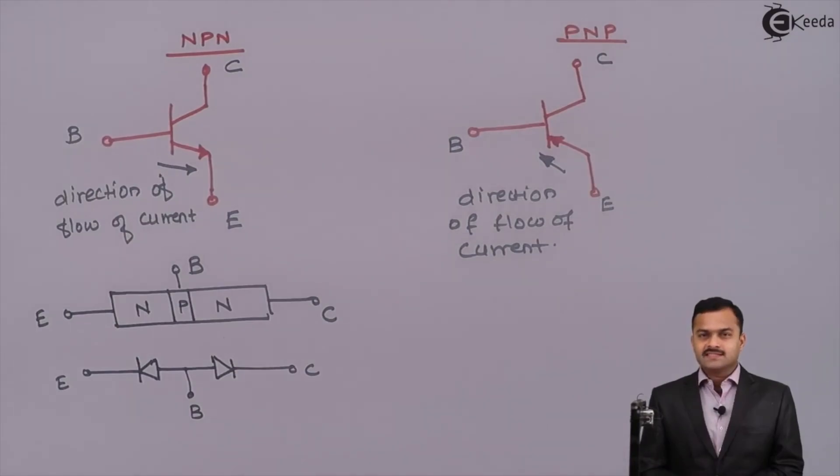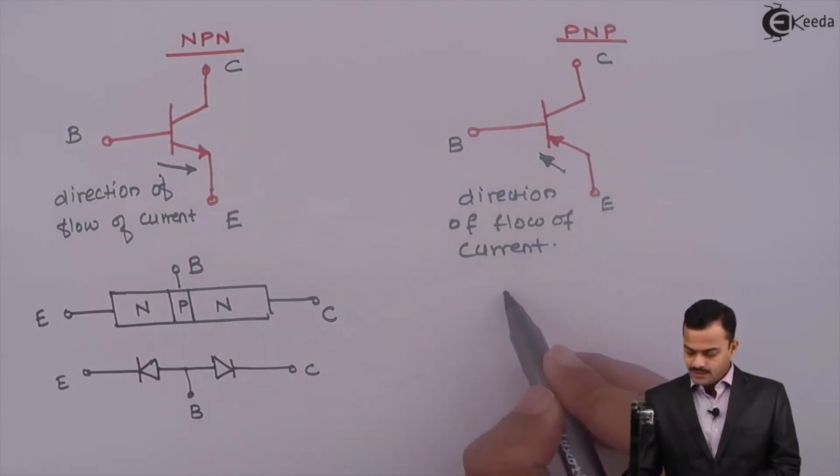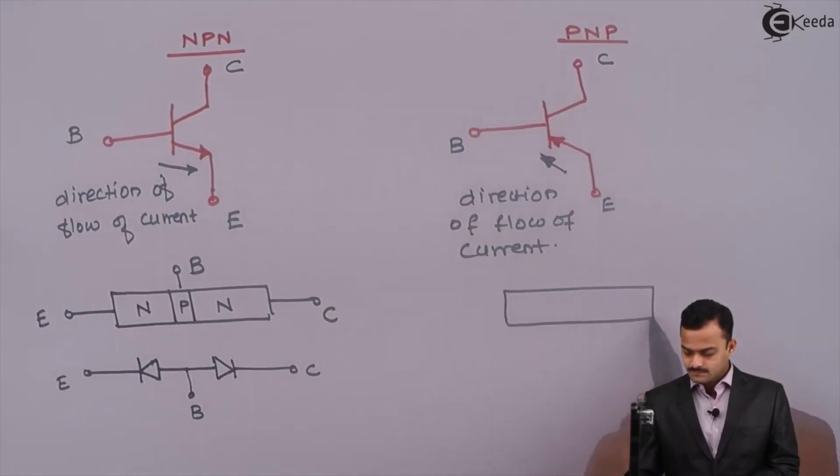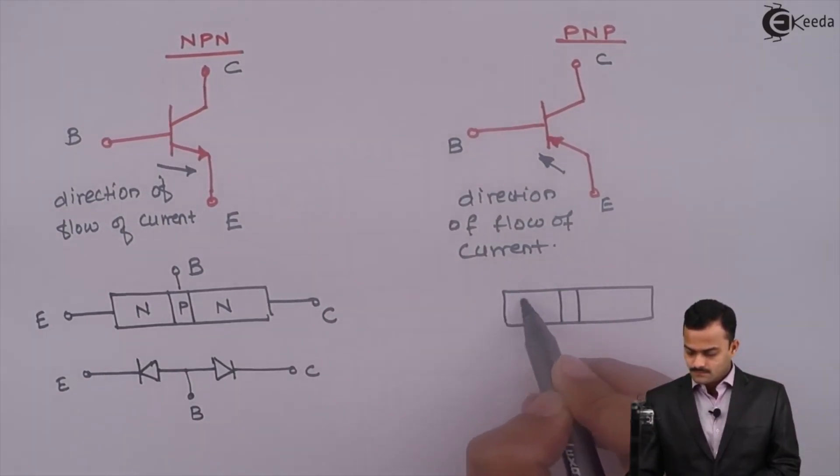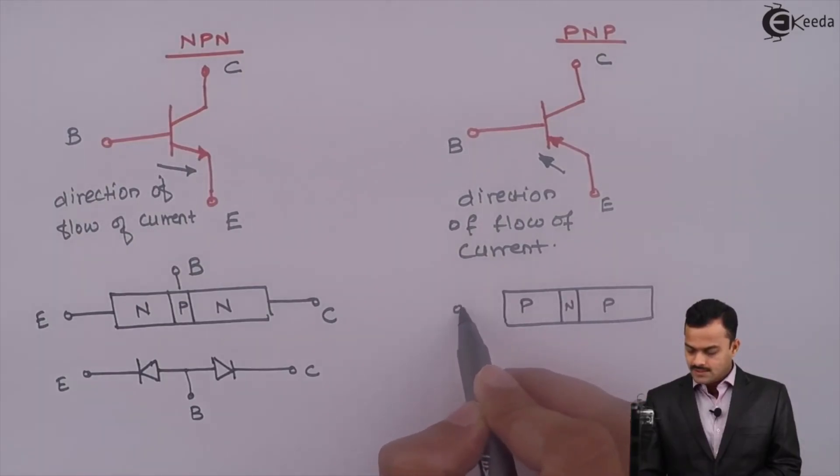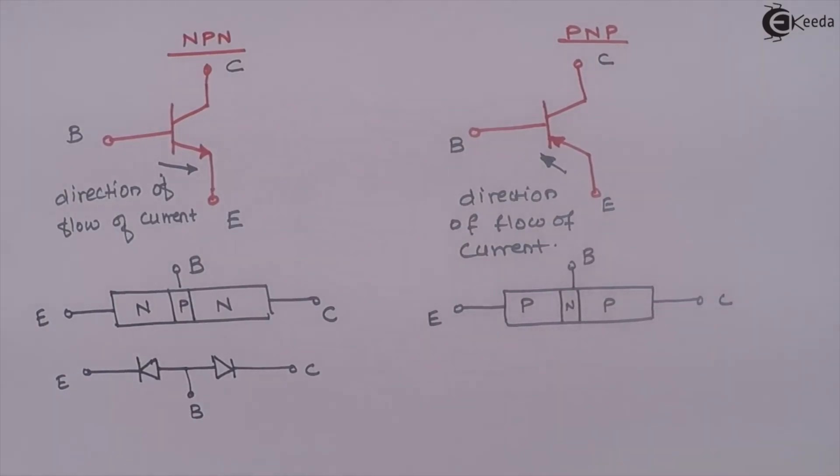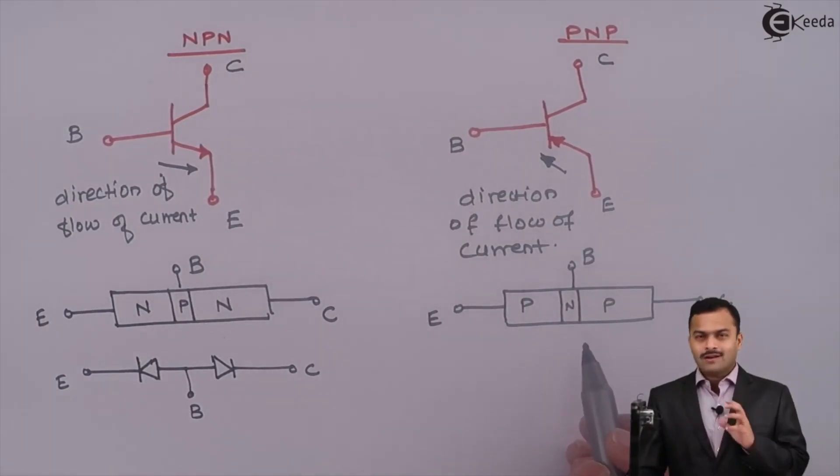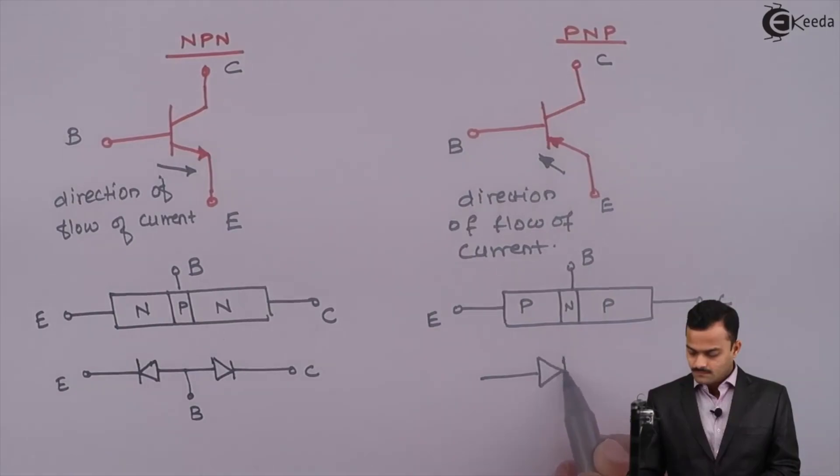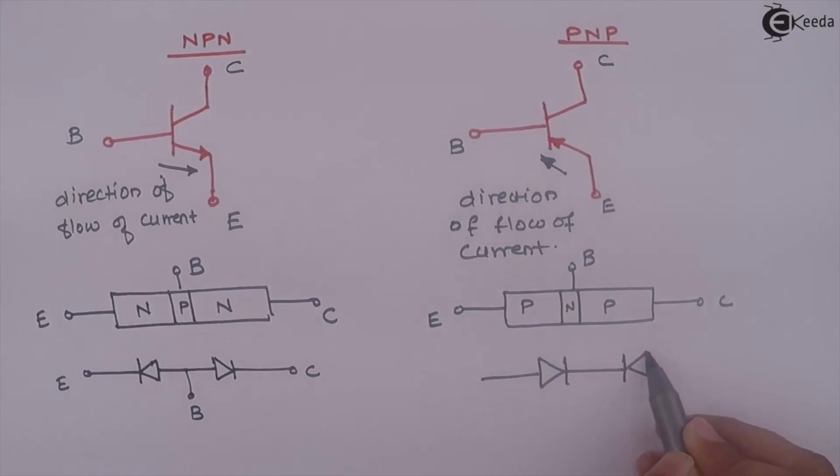For PNP Transistor, whatever we have discussed for NPN is applicable. That means if a three-layer structure is like this with the terminals as Emitter, Base, Collector, the overall structure is like this. Here you are having a PN and here PN like this, or you can say NP. So again, two diodes connected back to back.